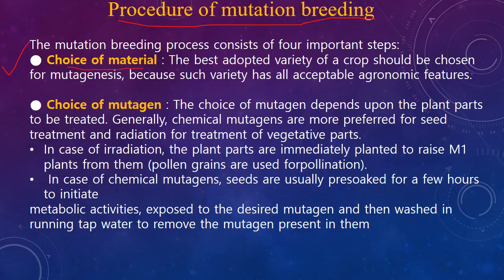The mutation breeding procedure consists of four steps. Step one: choice of material — the best-adapted variety of a crop should be used as it consists of all acceptable agronomic features. Step two: choice of mutagen — either irradiation or chemical mutagens. Chemical mutagens are more preferred for seed treatment, whereas radiation is used for vegetative parts.